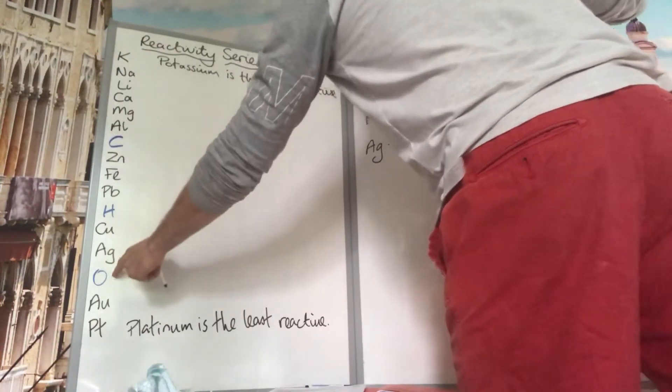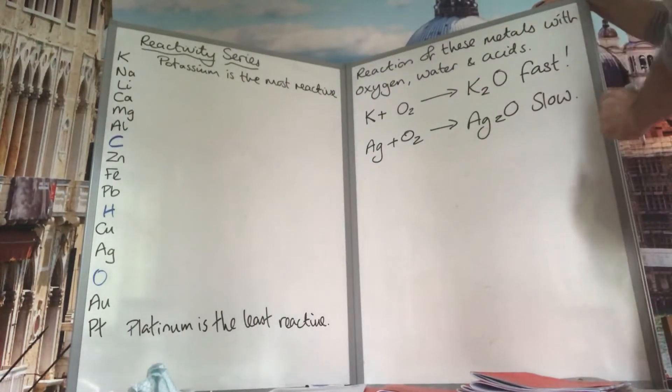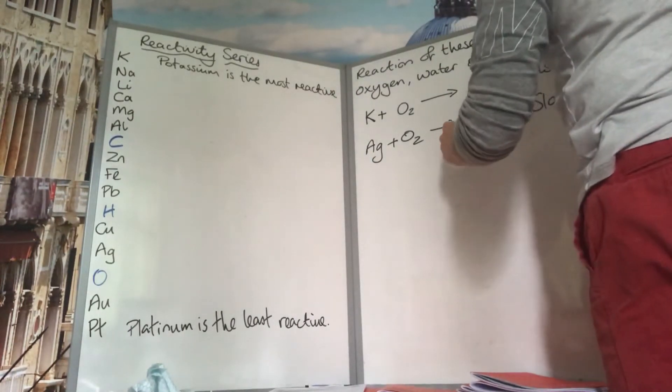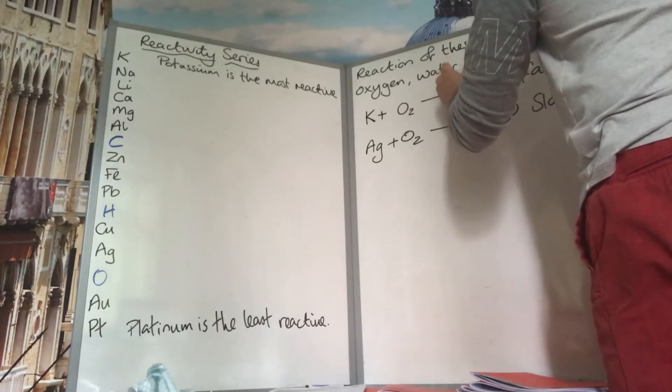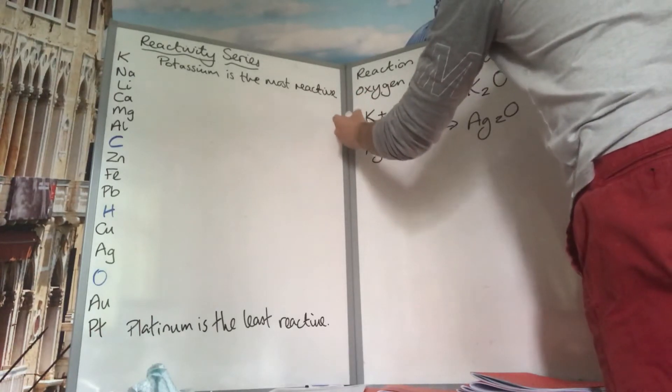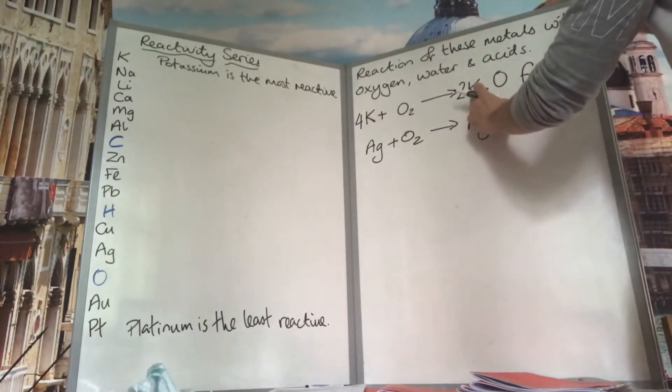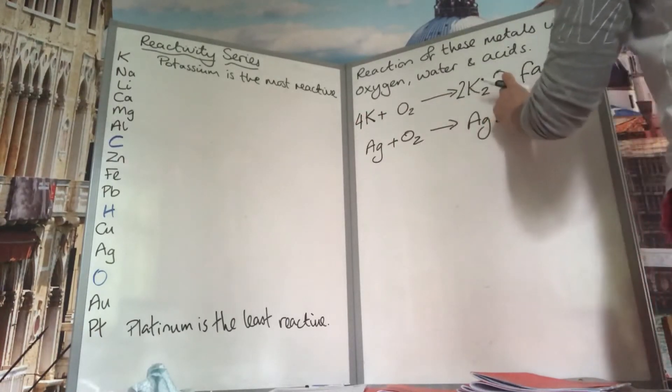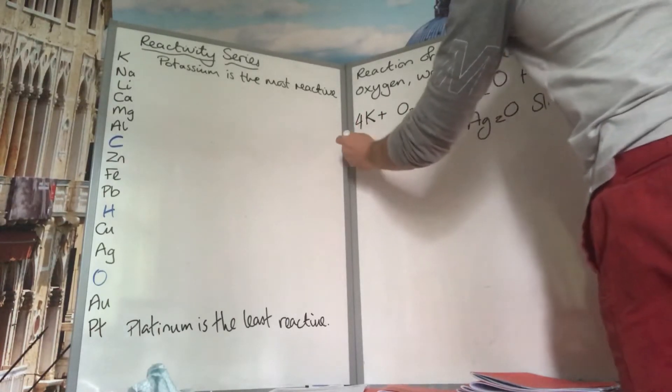You'll also need to balance these simple equations as well. So we need to balance these out. So we've got four potassium, four potassium, two oxygen, two oxygen, and exactly the same here.